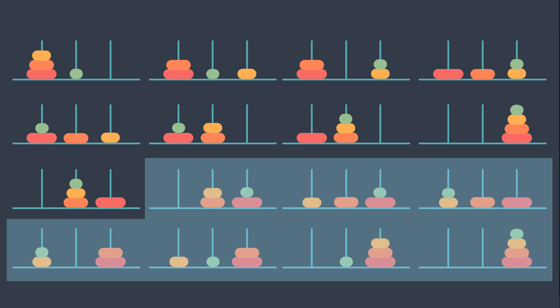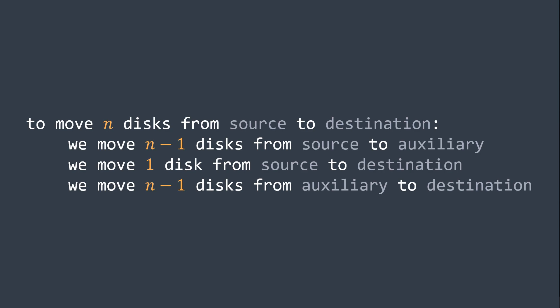But wait, there is something interesting here, because in reality what we are doing in Tower of Hanoi in general is that we are moving N disks from source to destination. And we said that in order to do that, we move N-1 disks from source to auxiliary, then we move 1 disk from source to destination, then we move N-1 disks from auxiliary to destination. And when N is equal to 1, we just move 1 disk from source to destination. And here is the interesting part — the action inside the function is being called again, so it's recursion.